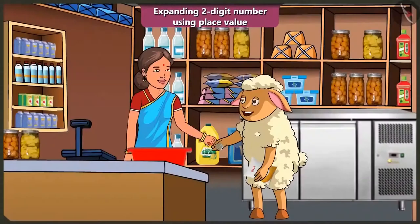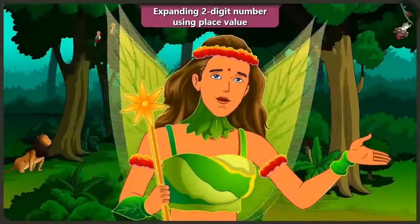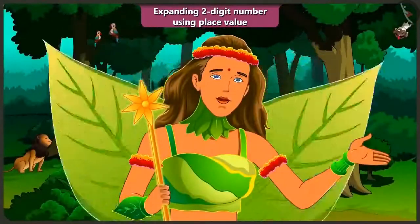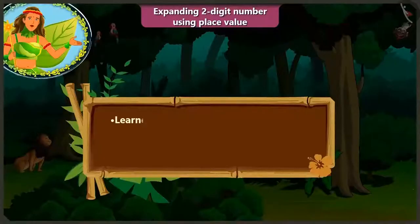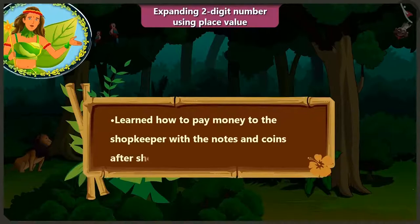It is 50, but 5 are still remaining. I don't have a 5-rupee note, but you have coins — these are 1-rupee coins. You have 5 coins of 1 rupee each, so all these 5 one-rupee coins make a total of 5 rupees. So Aunty, take these 5 rupees. Today, after doing some shopping, we learned how to make payment to the shopkeeper with the help of notes and coins. In the next video, we will learn to add numbers to a group of two-digit numbers.